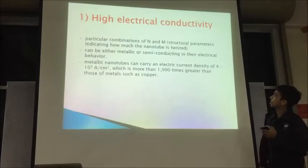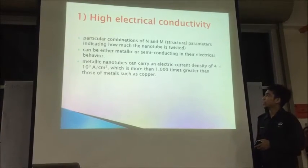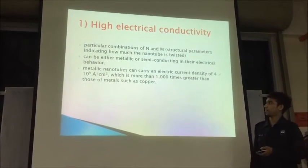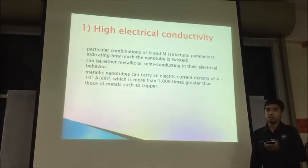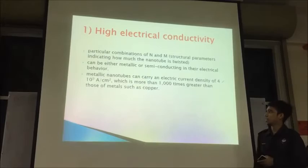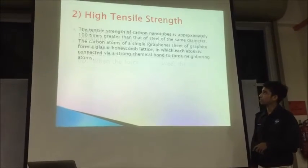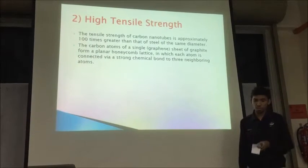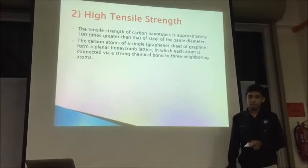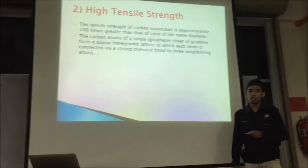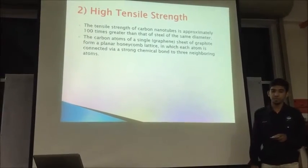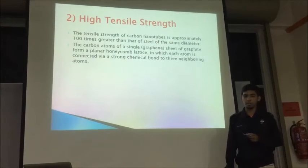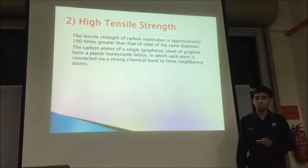A metallic carbon tube can carry an electric current density of 4 times 10 to the power of 9 amps per cm², which is more than 100,000 times greater than metals such as copper. Second, high tensile strength. Tensile strength is the measure of the amount of force an object can withstand without tearing apart. The tensile strength of the carbon tube is approximately 100 times greater than that of steel of the same diameter. The carbon atoms of a single graphene sheet form a hexagonal lattice in which each atom is connected by a strong chemical bond to three neighboring atoms.